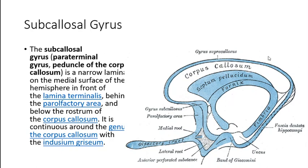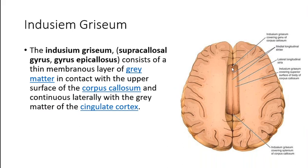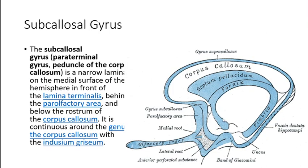The subcallosal gyrus is a narrow thin lamina of gray matter on the medial surface of the hemisphere, in front of the lamina terminalis, seen under the corpus callosum. Near the olfactory tract is the paraolfactory area. The gray matter above and under the corpus callosum and its genu is called the indusium griseum — a thin layer of nerve cells upon the corpus callosum associated with the limbic lobe, also called the supracallosal gyrus.